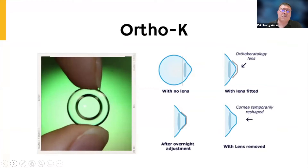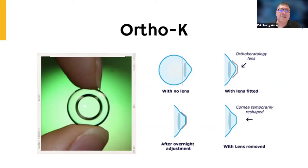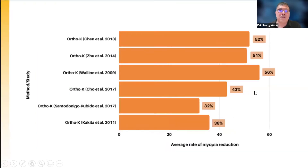Orthokeratology is a lens that a patient wears to sleep. While the patient sleeps with the lenses, they cause a shift in cells of the front part of the eye — the cornea — which does two things. First, it creates a surface that allows myopic defocus to happen. Second, it reduces myopia for the day so the patient can function without spectacles or contact lenses for an entire day. At night, they need to wear the ortho-K lenses again because the cornea will try to return to its original shape. The effectiveness of orthokeratology ranges from 32% to 52%.